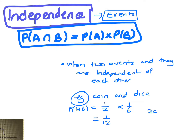You could do two coins, you could do a hundred coins. If you threw a hundred coins, what you get on the first coin doesn't impact what you get on the last coin.